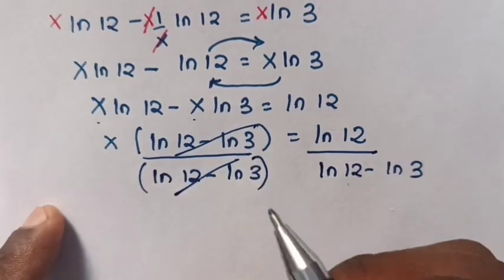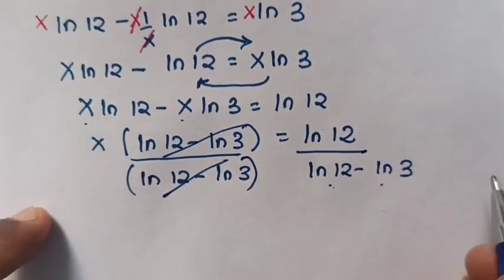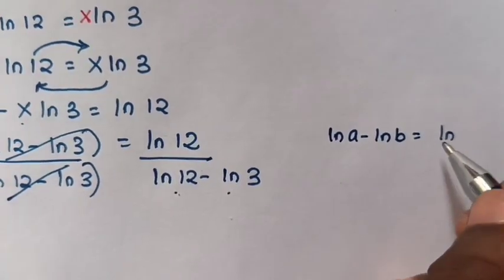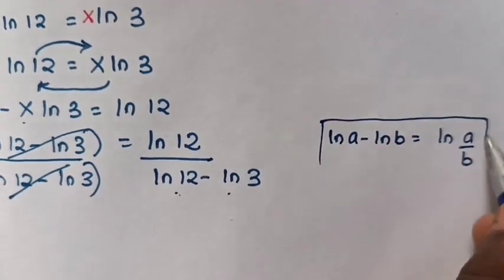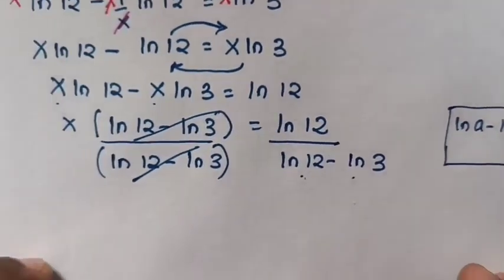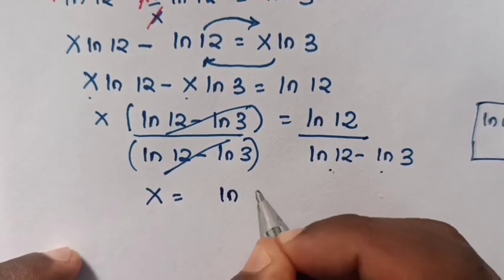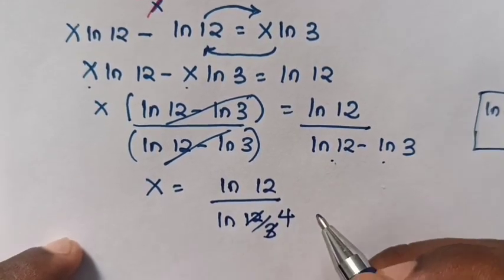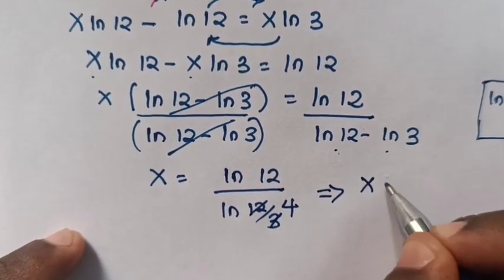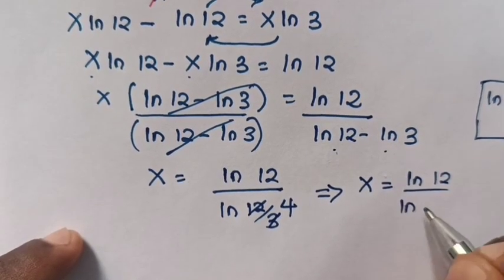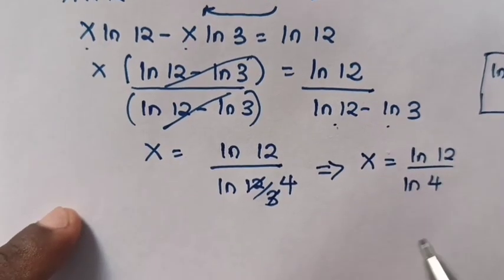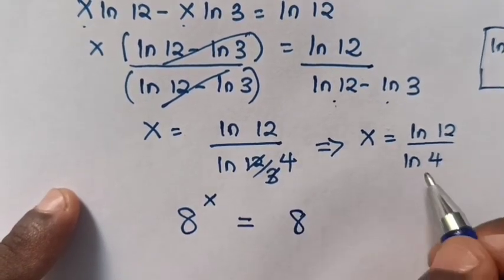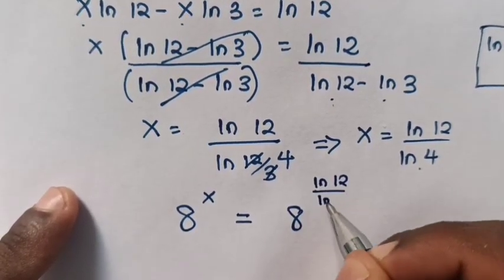From ln 12 minus ln 3, we apply the log rule that ln A minus ln B equals ln(A over B), so ln 12 minus ln 3 equals ln 4. Therefore x equals ln 12 over ln 4. Now we are asked to find 8 power x, and we know the value of x, so it is 8 power (ln 12 over ln 4).